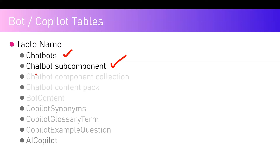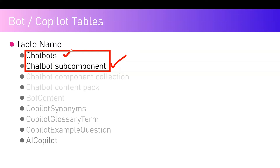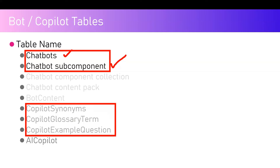There are other tables as well like Chatbot Component Collection, Chatbot Content Pack, and Bot Content. I didn't find any specific content within those so I'm not sure of their functioning. However, the two primary tables which are very important from an architecture perspective are Chatbots and Chatbot Subcomponent.